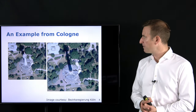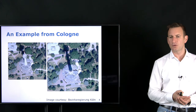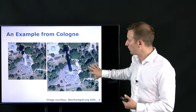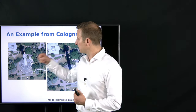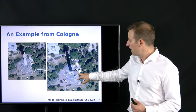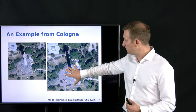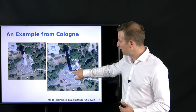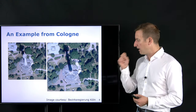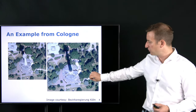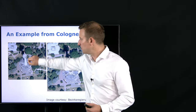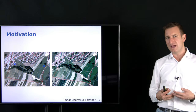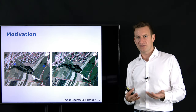Here is an example from Cologne, provided by the Bezirksregierung Köln, showing how a true orthophoto looks. This is the original photo of a tower in Cologne, and here is the corrected top-down orthophoto, where you can see how the correction has taken place — you no longer see the sides of the tower. You can actually perform measurements in this corrected image, which you couldn't do in the original.